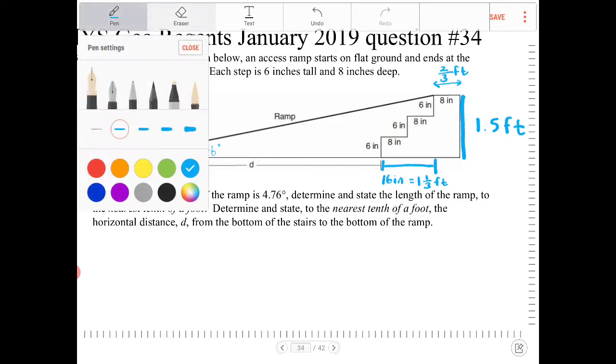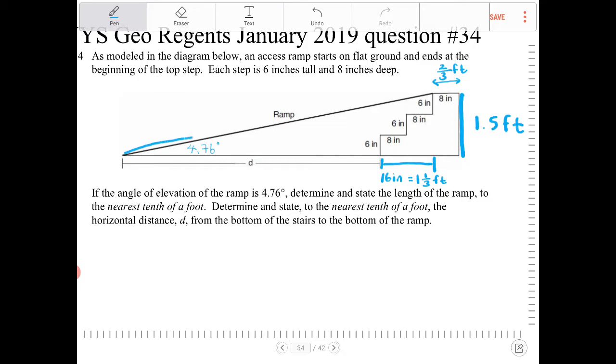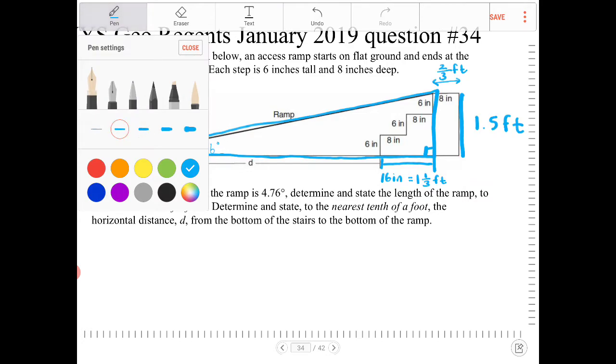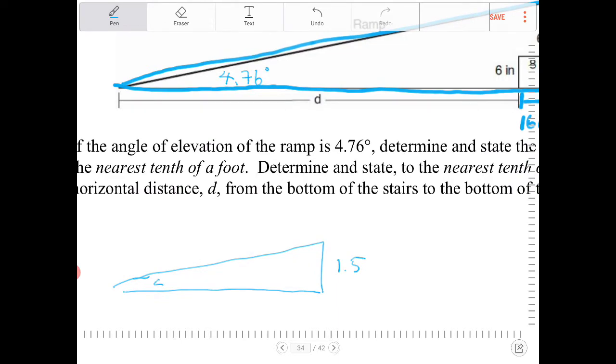So looking at this right now, I see here that I actually have a right triangle. And in this right triangle, the height is 1.5. The angle of elevation is 4.76. I now have enough information to find out what is the length of the ramp.